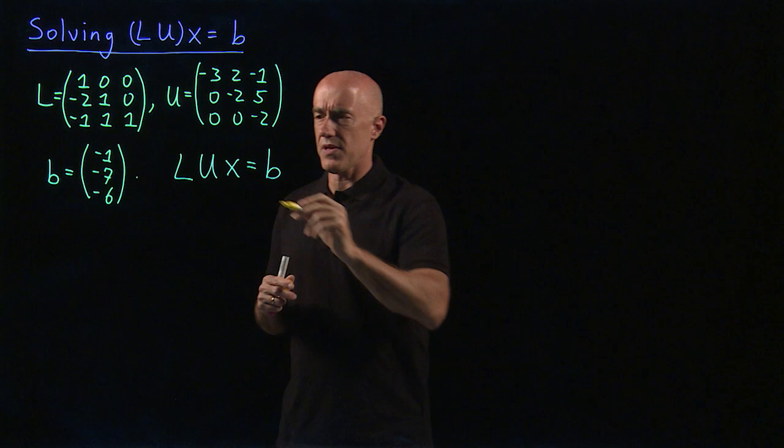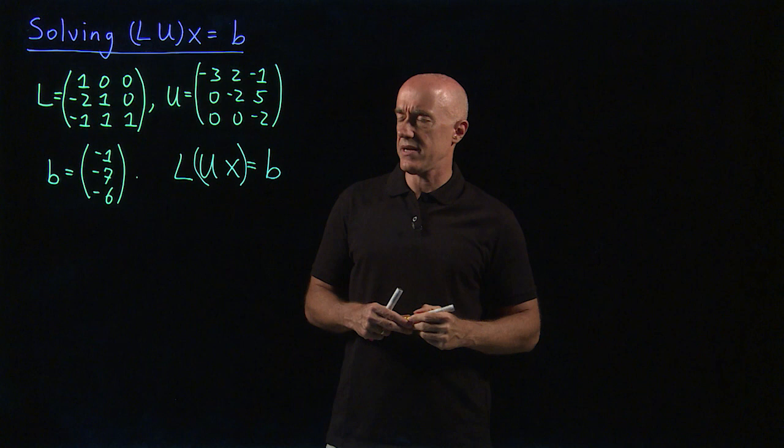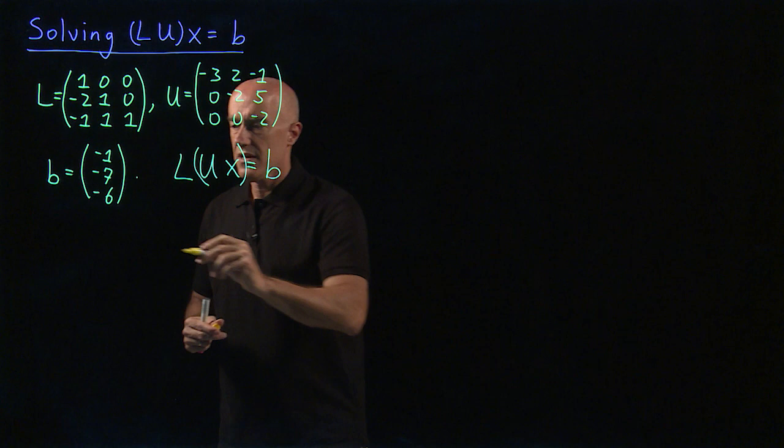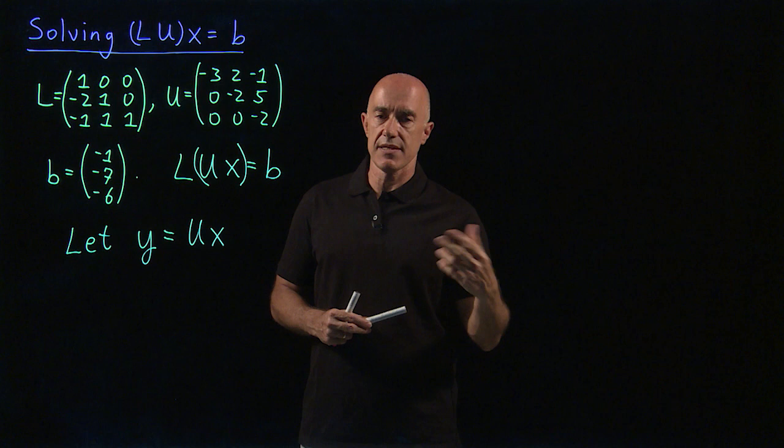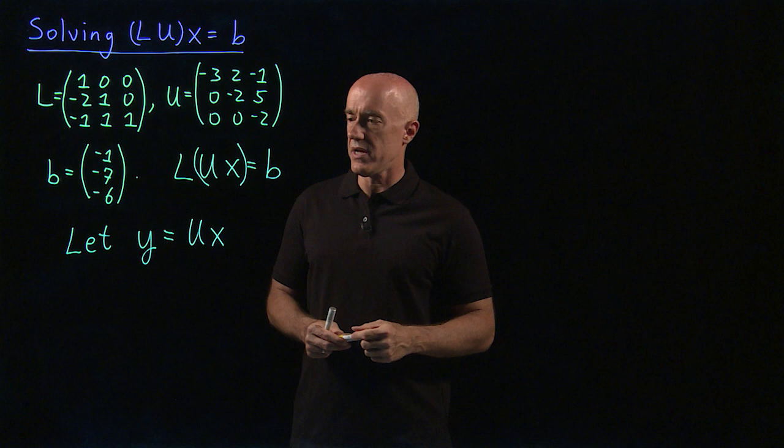So we're solving this LUx equals B. To solve this, we do something, sort of a trick, is that we put a parentheses over UX. So we're going to define a new variable here. We're going to let a new variable Y equal to this U times X. So remember, U is a three-by-three matrix, X is a three-by-one column vector. Y, then, is also a three-by-one column vector.